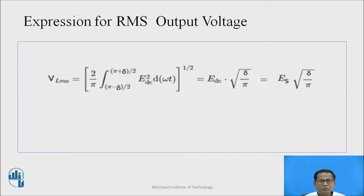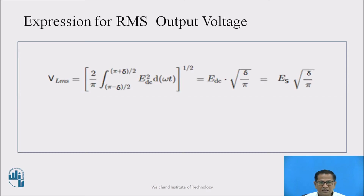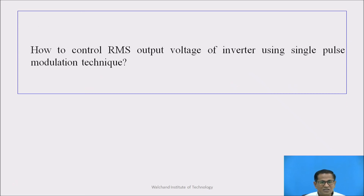Vrms = (2/π) · [∫ from (π − δ/2) to (π + δ/2) of Edc² · d(ωt)]^(1/2), which gives Vrms = Edc · √(δ/π), where δ is the pulse width. In single pulse modulation, as the pulse width changes from 0 to π, the RMS voltage changes from 0 to Vs. By controlling the pulse width in this way, it is possible to control the RMS output voltage of the inverter.